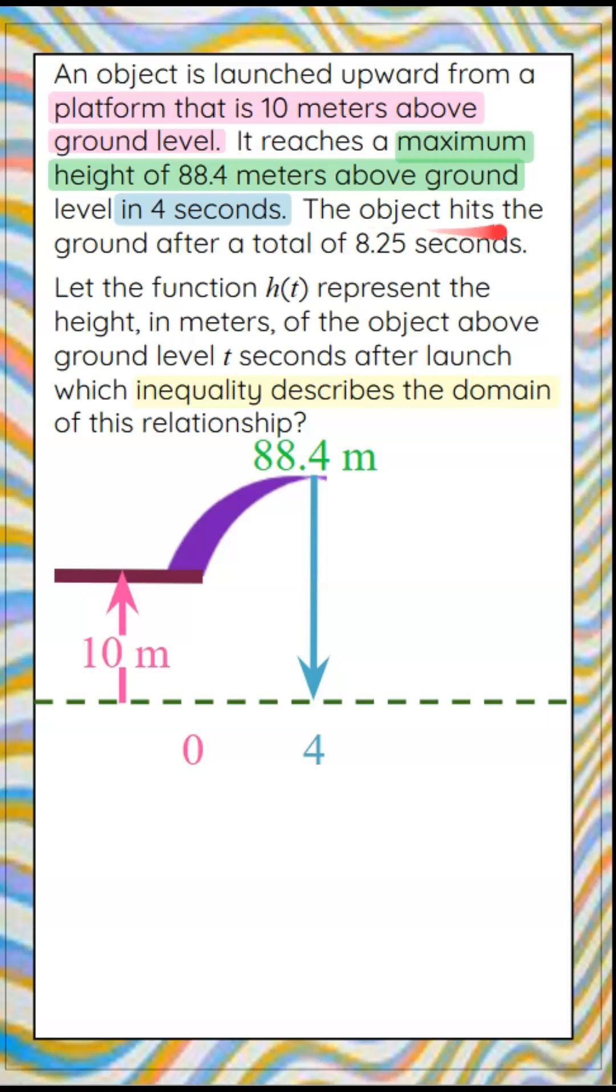Now we're told that the object is going to hit the ground after a total of 8.25 seconds. So our object continues from its maximum height, continues to the ground, and that happens in 8.25 seconds.